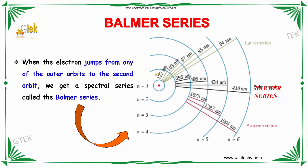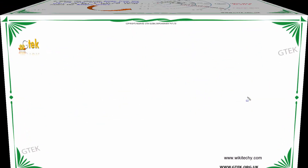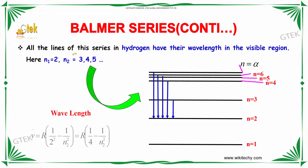When the electron jumps from any of the outer orbits to the second orbit, it is referred to as the Balmer series. All the lines of this series in hydrogen have their wavelength in the visible region. If n1 is equal to 2 and n2 is 3, 4, 5 or higher, the wave number is ν̃ = R(1/4 − 1/n2²). That is the Balmer series.